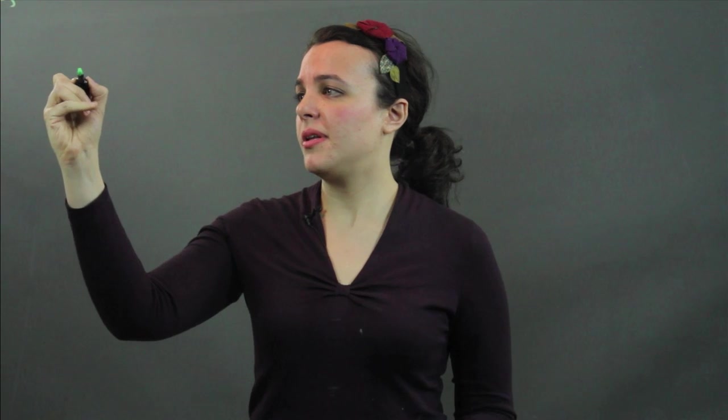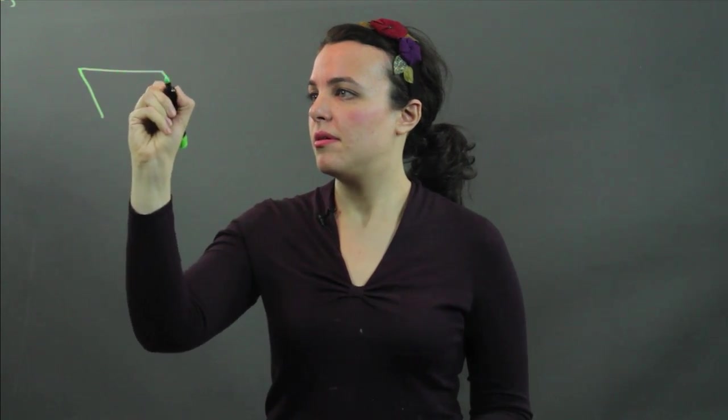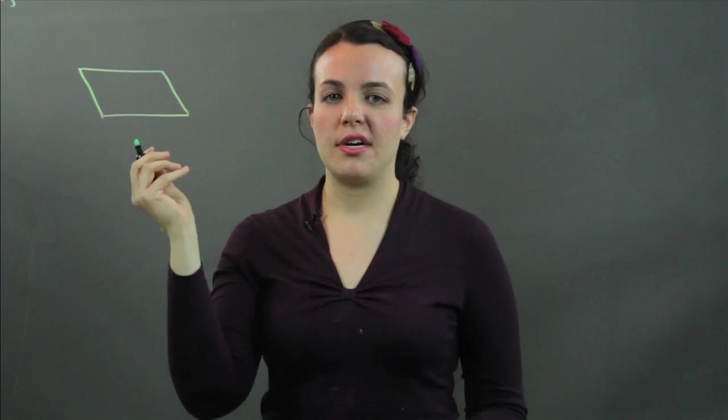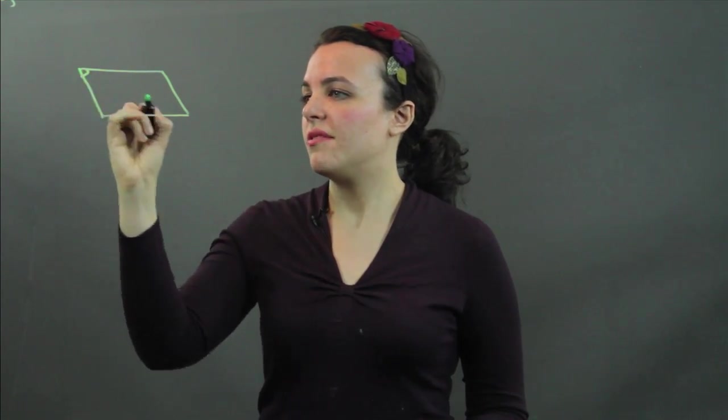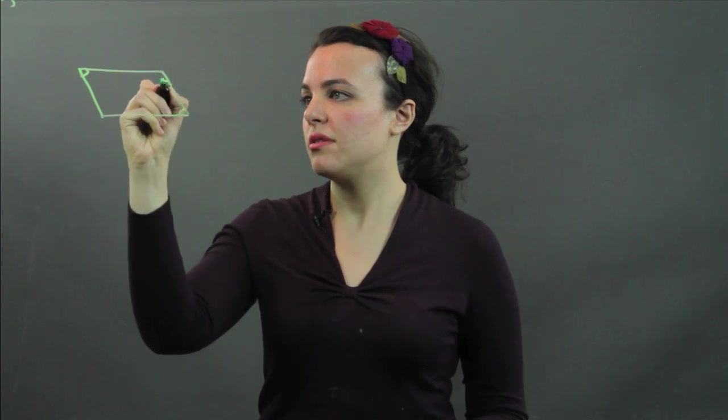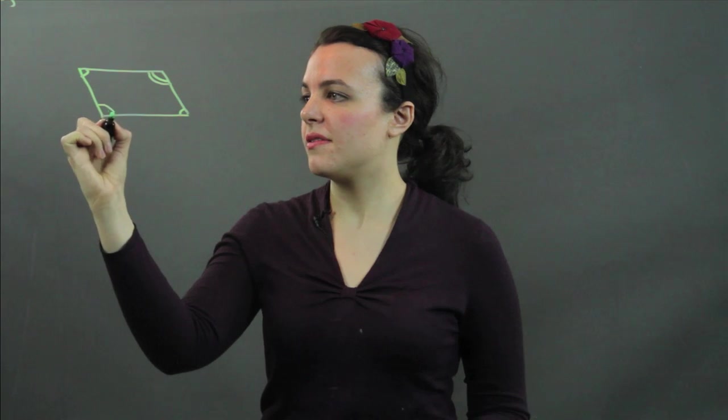We're going to look first at parallelograms. So we've got the four sides, it's a quadrilateral. We have two pairs of congruent angles. Here's the other pair of congruent angles.